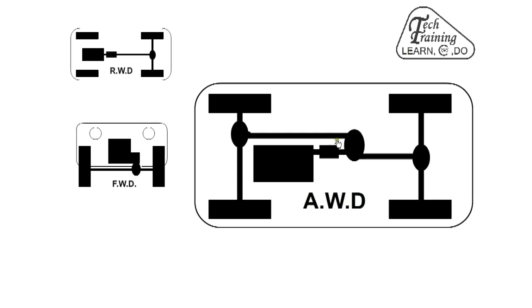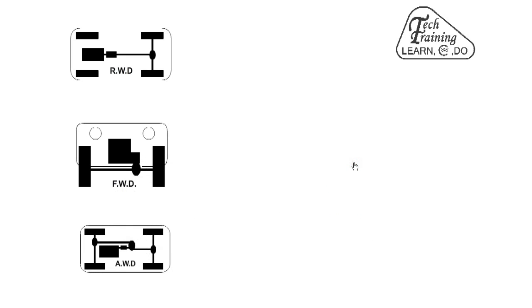With an all-wheel drive car, we normally have three differentials. One in the middle to apportion torque between front and rear, one in the back axle and one in the front axle. Normally, the center diff is a viscous coupling.